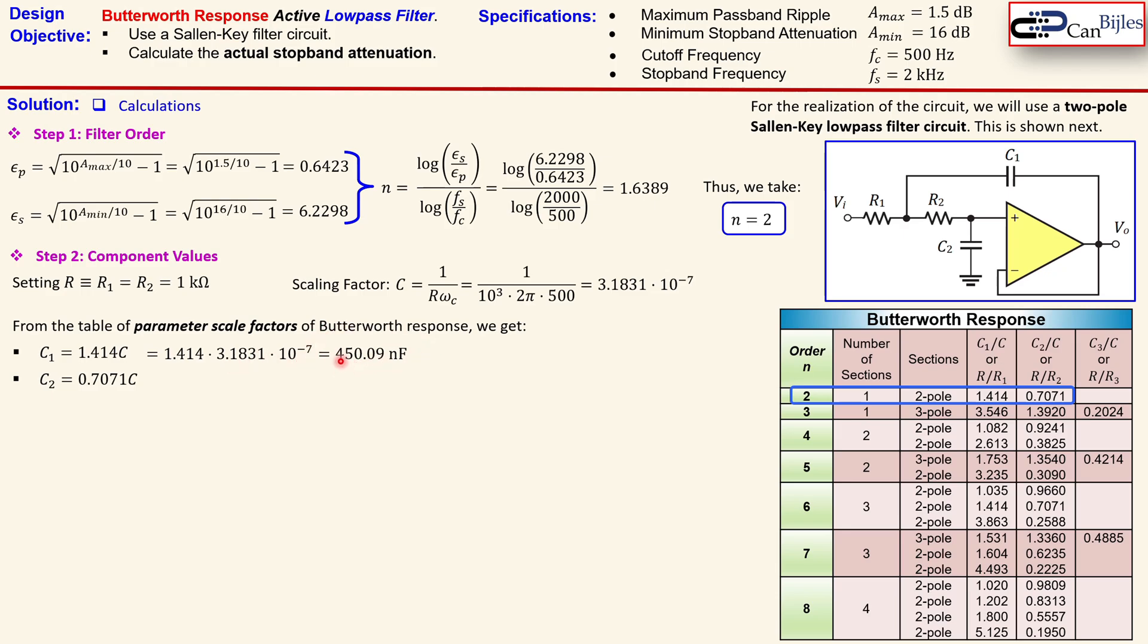You get here almost 450 nF. In a similar form we have here almost 225 nF. So we have actually calculated now the C1 and the C2 and we have selected the R1 and R2 to be exactly the same and that will allow us to calculate the C1 and C2 using this Butterworth response table.